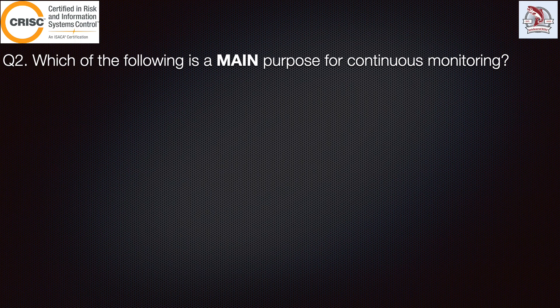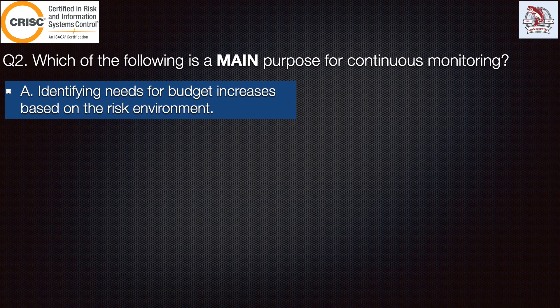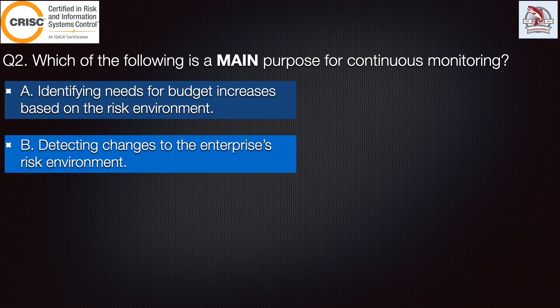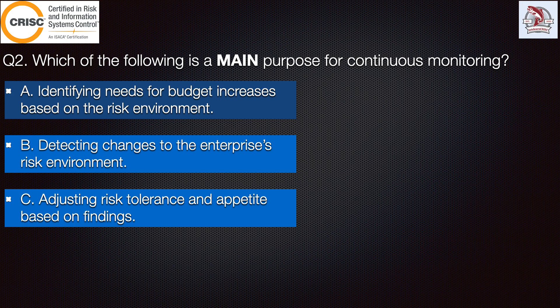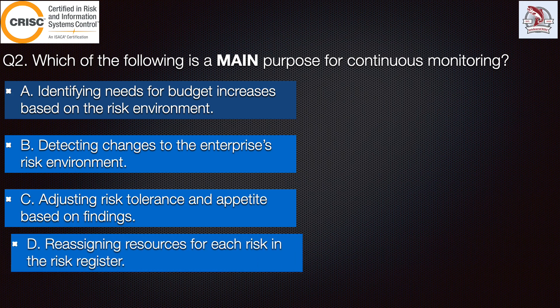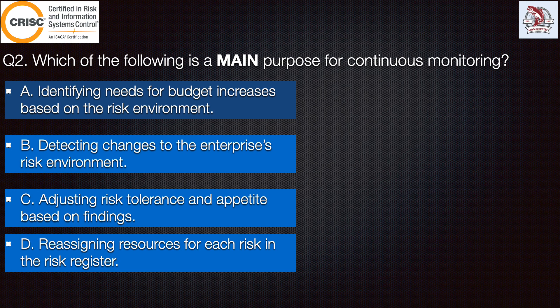The next question states: which of the following is the main purpose for continuous monitoring? Option A: identifying need for budget increases based on the risk environment. Option B: detecting changes to the enterprise risk environment. Option C: adjusting risk tolerance and appetite based on the findings. Option D: reassigning resources for each risk in the risk register.